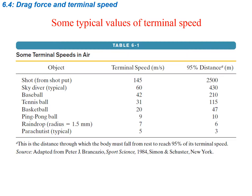Looking at some typical terminal speed values: a skydiver reaches about 60 meters per second as the maximum, attaining this speed in roughly 430 meters — that represents about 95% of the distance needed to fully reach terminal speed. Terminal speed is approached asymptotically, so you never truly reach it. A ping pong ball is much slower with more drag and a shorter distance. A raindrop has a terminal speed of about 7 meters per second, reached in only about 6 meters.